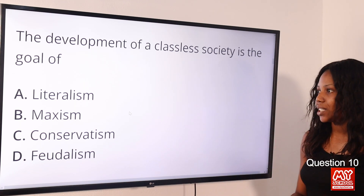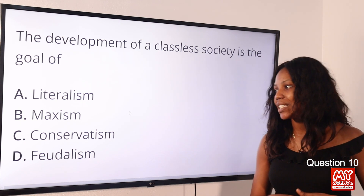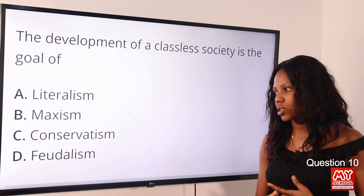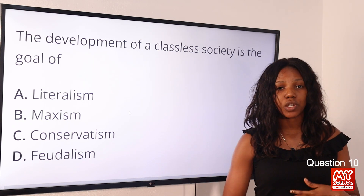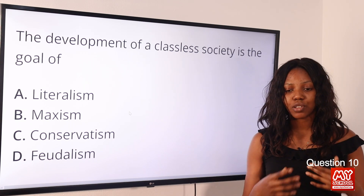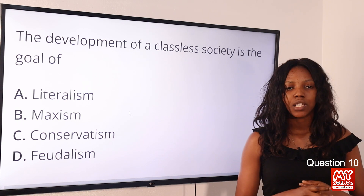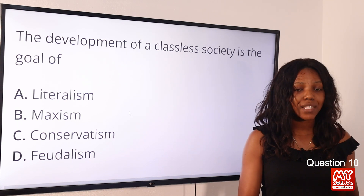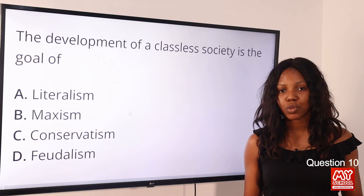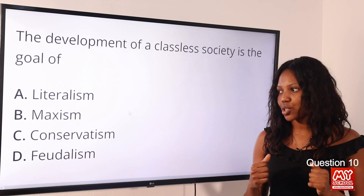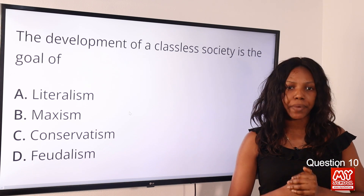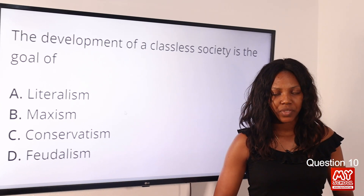Question 10: The development of a classless society is the goal of — option A: liberalism; option B: Marxism; option C: conservatism; option D: feudalism. The answer is option B, Marxism. Marxism is a theory that proposes that states repress and suppress the lower class, and so the lower class fights to achieve a classless society.